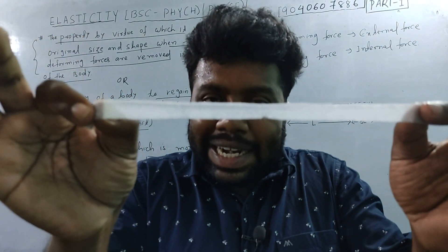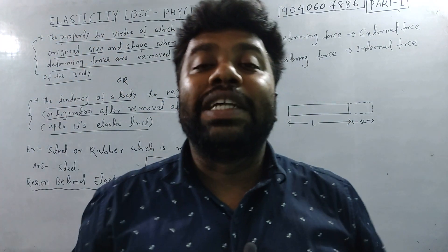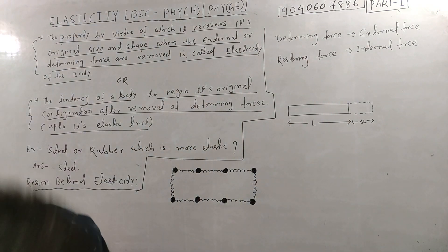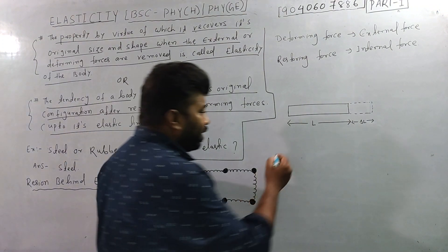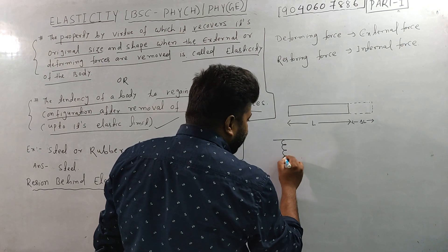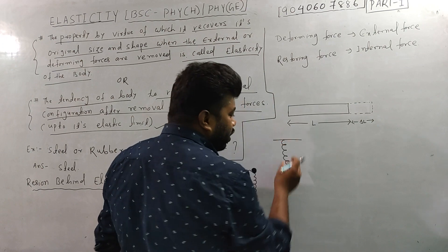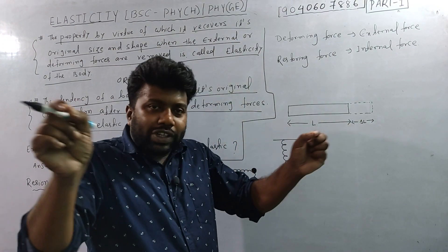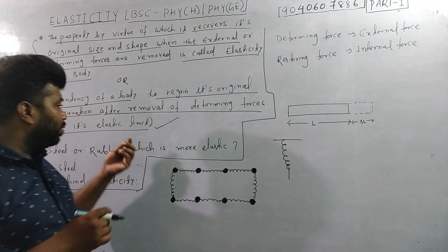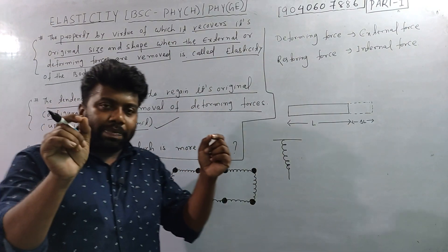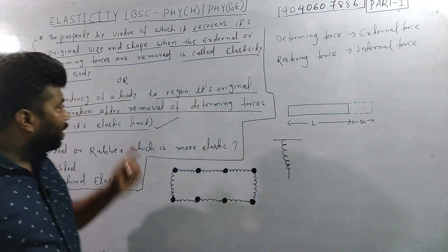There is a limit to the external force you apply. Up to its elastic limit, the body will return to its original shape. A spring or elastic material will recover up to its elastic limit. Beyond that limit, it will break or deform permanently and will not return to its original configuration.